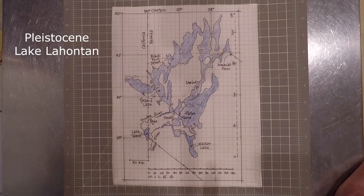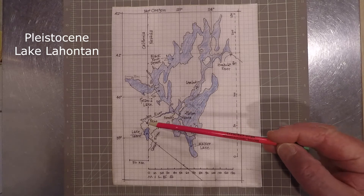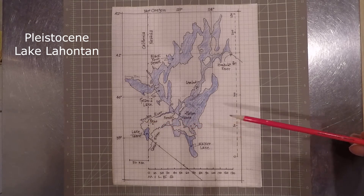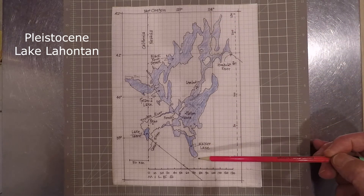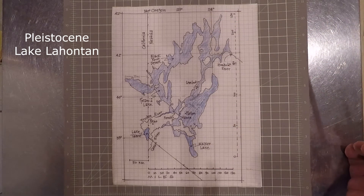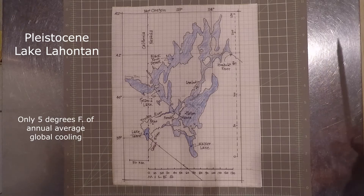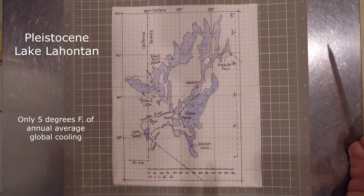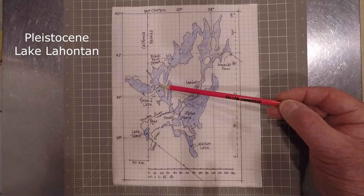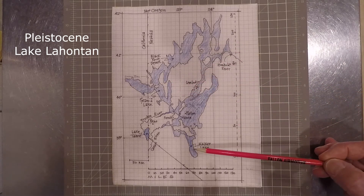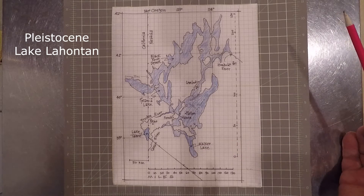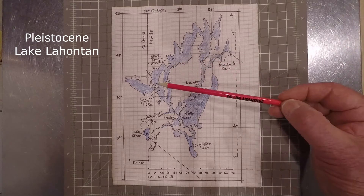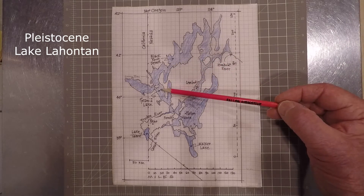At its maximum extent, its dimensions were 165 miles west to east and 230 miles north to south. This vast lake was similar in scale to some of the Great Lakes. Remnants are left as present-day Pyramid Lake and Walker Lake. In Pleistocene times the lake was 900 feet deep at Pyramid Lake, similar to Lake Erie.